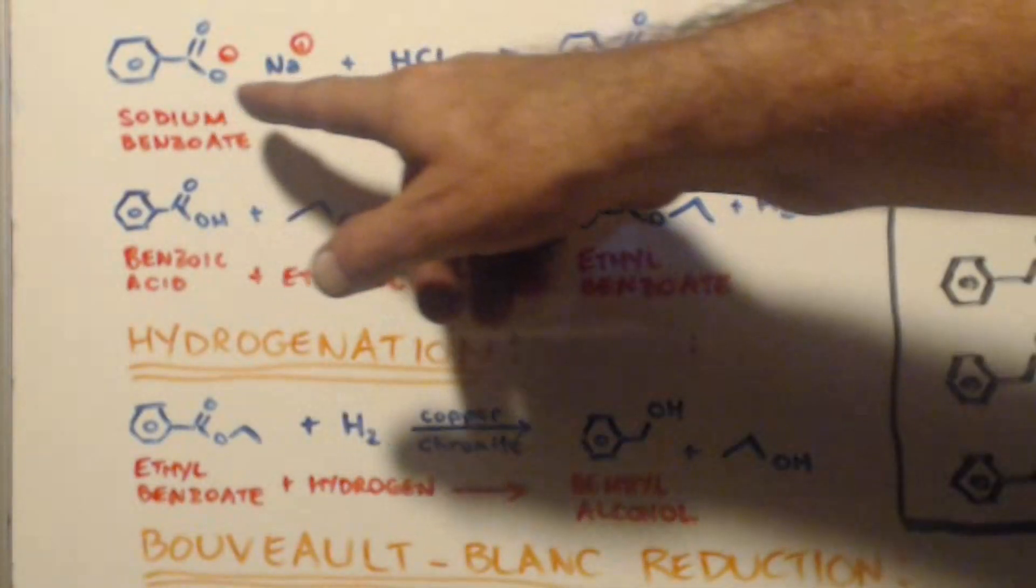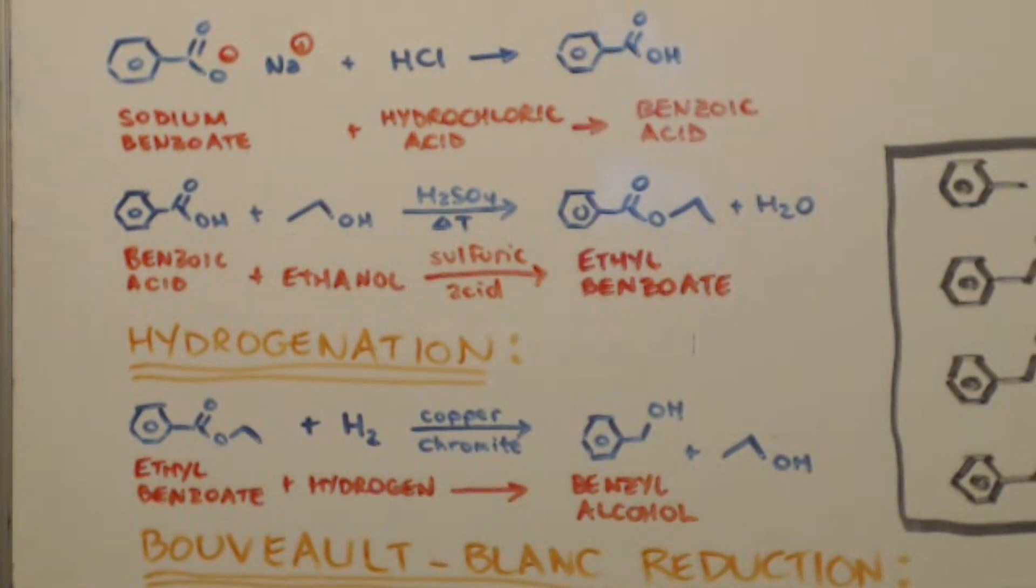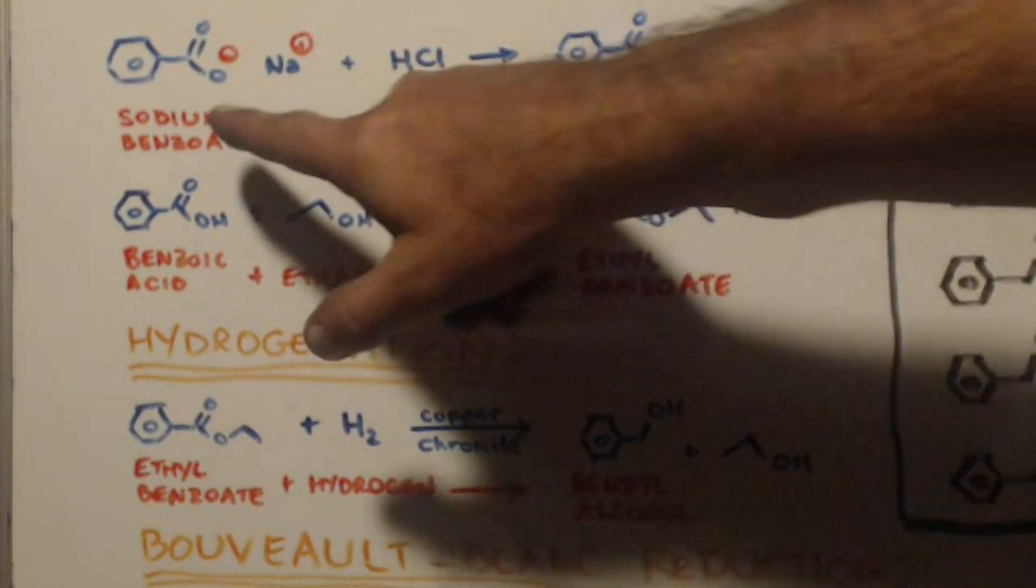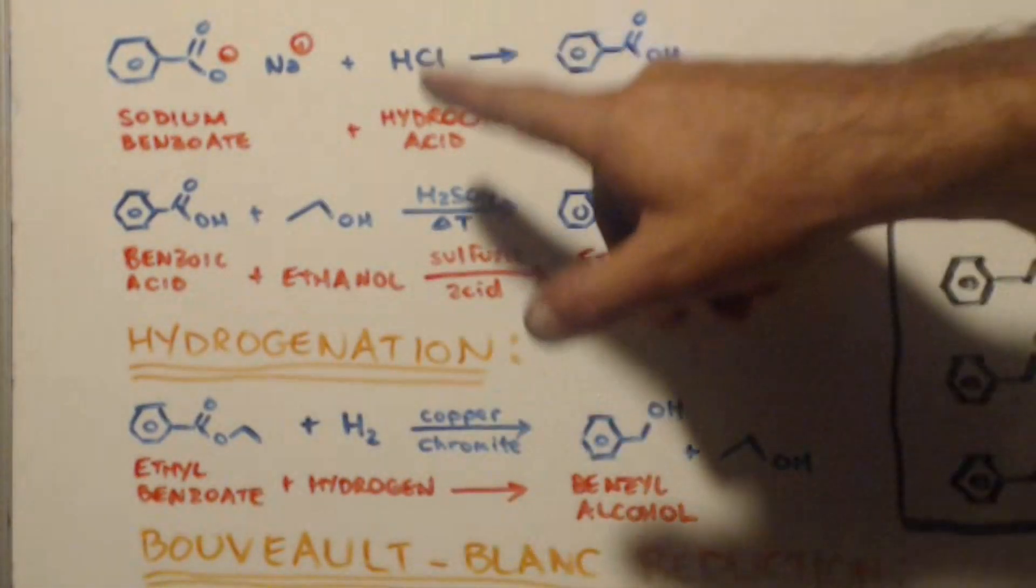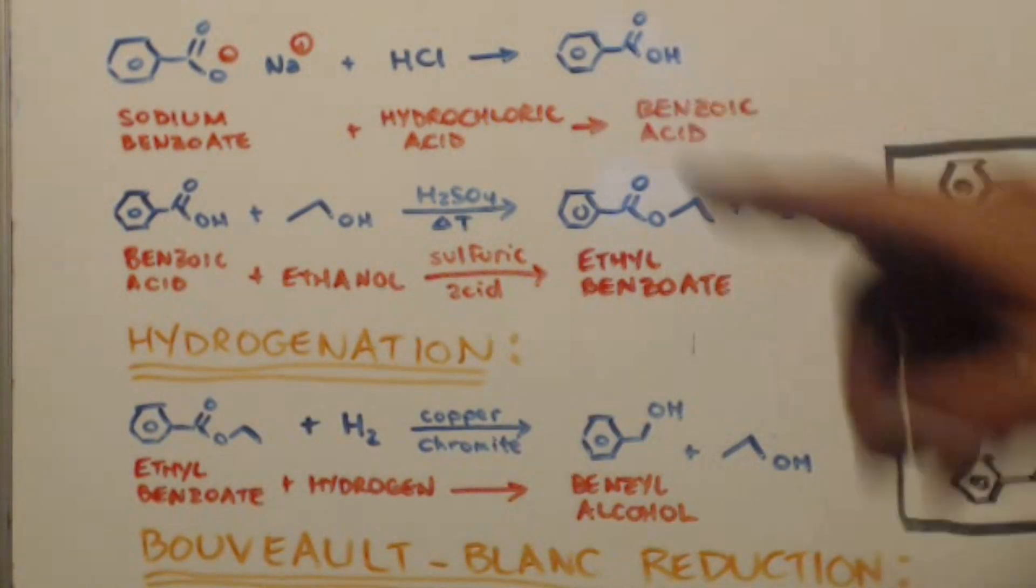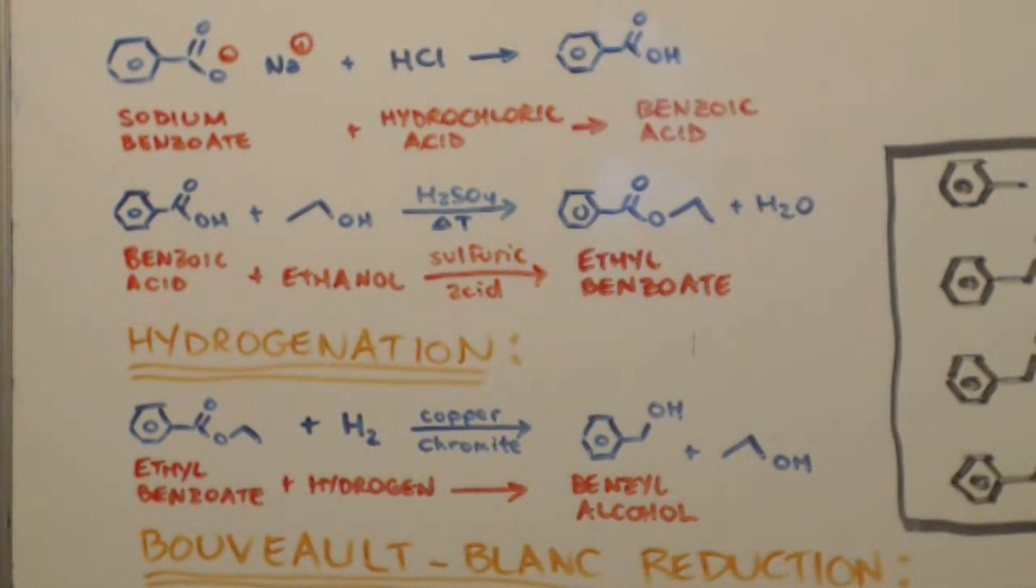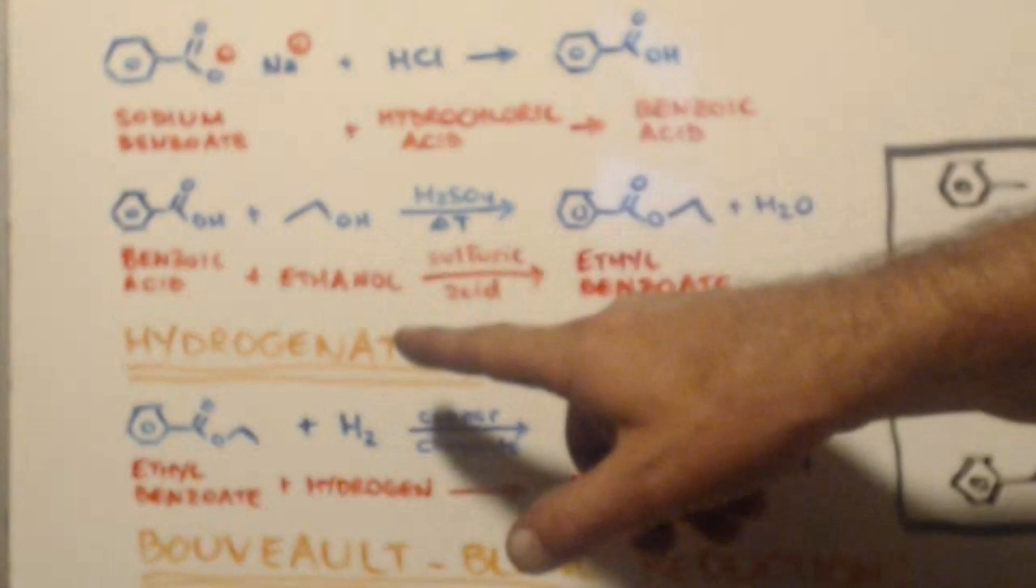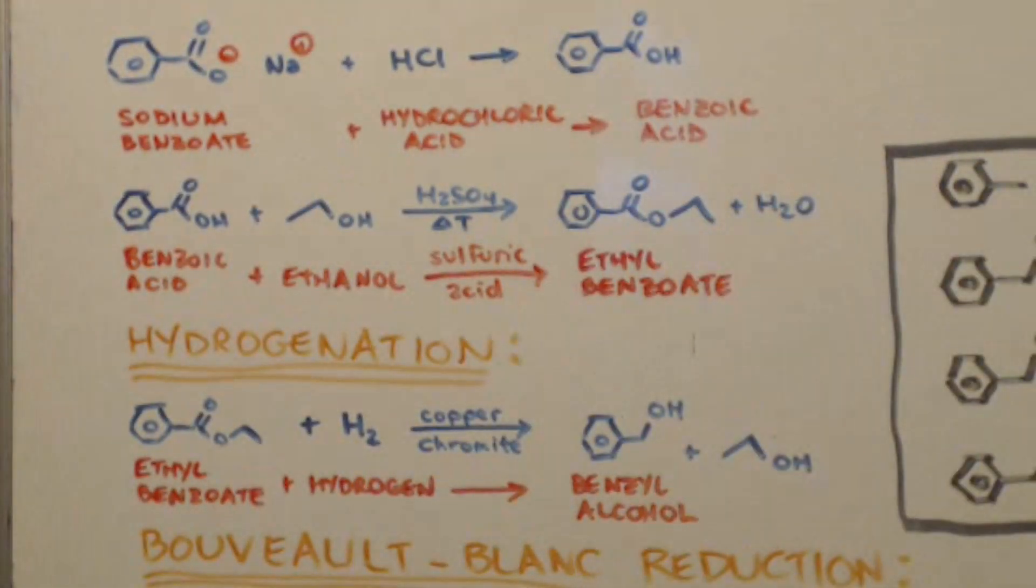And I want you to look up here. Here's your sodium benzoate, right? That's this food preservative. Anyone can get that. Hydrochloric acid. Anyone can get that at the hardware store. Mix them together. Put this in water so it dissolves. And then add some hydrochloric acid. And what happens is benzoic acid precipitates out. And then you can just filter it out. You've got benzoic acid. What's that, 30 minutes of time?